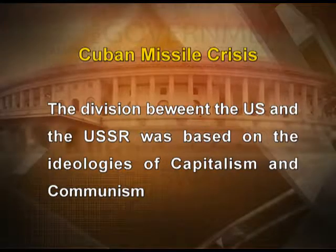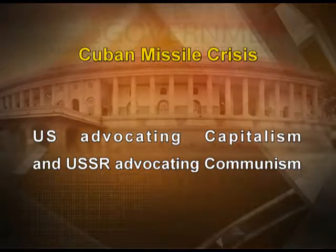After the end of the Second World War, the world got divided between two rival camps — the division between the US and the USSR. This division was based on the ideologies of capitalism and communism held by both of them respectively, with the US advocating capitalism and the USSR advocating communism. In the process of this rivalry, both of them attempted to influence smaller countries to align with them — meaning to stand with or believe in their ideologies.